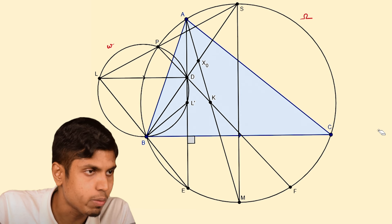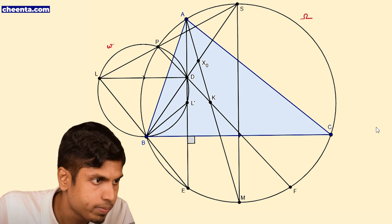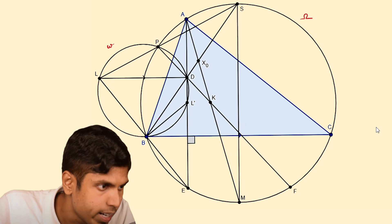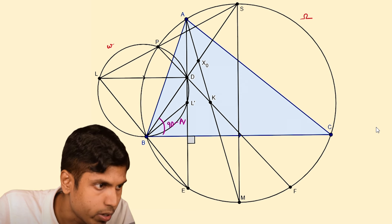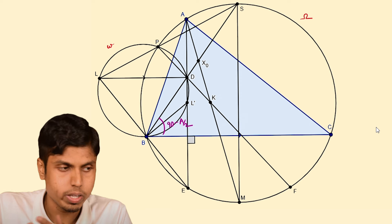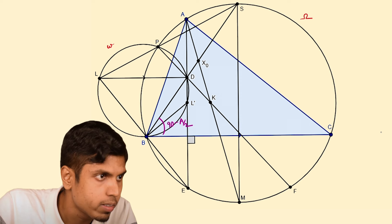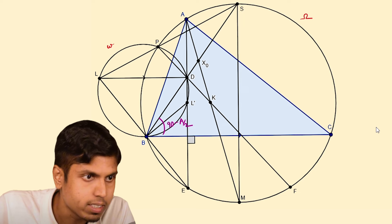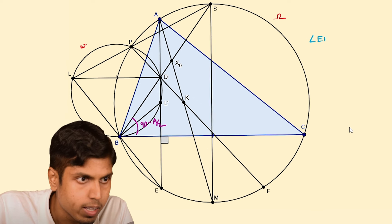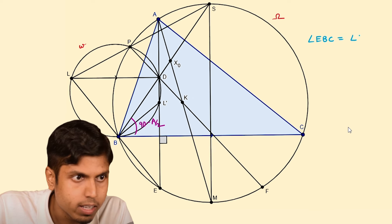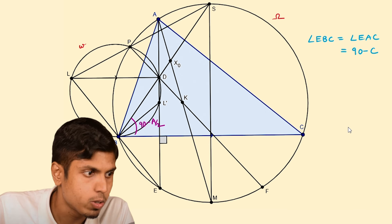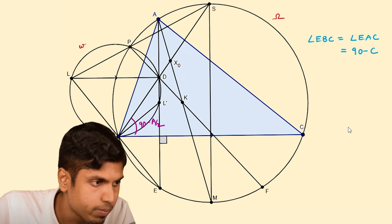Let's figure out some angles. The angle SBC is 90 minus A/2, as we know. Notice that angle ABC equals angle EAC. Angle EAC equals 90 minus C, so angle ABC is also 90 minus C.